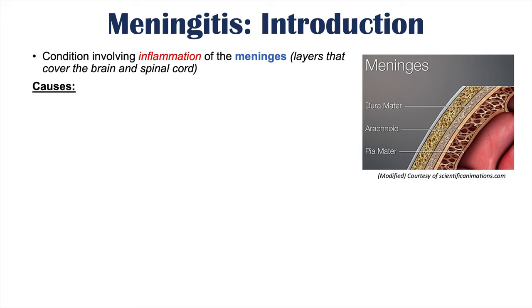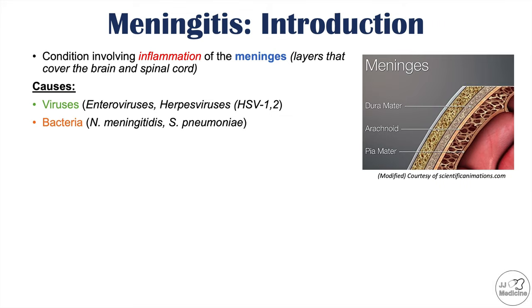There are a variety of causes of meningitis. Some include viruses — enteroviruses and herpesviruses like herpes simplex virus 1 and 2 can all cause meningitis, and there are even more viruses that can lead to meningitis. Bacteria like Neisseria meningitidis, Streptococcus pneumoniae, Haemophilus influenzae, and Listeria monocytogenes can also cause meningitis, and there are even more bacteria that can lead to meningitis as well.